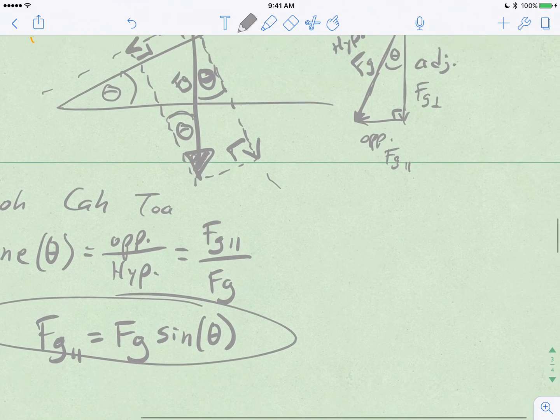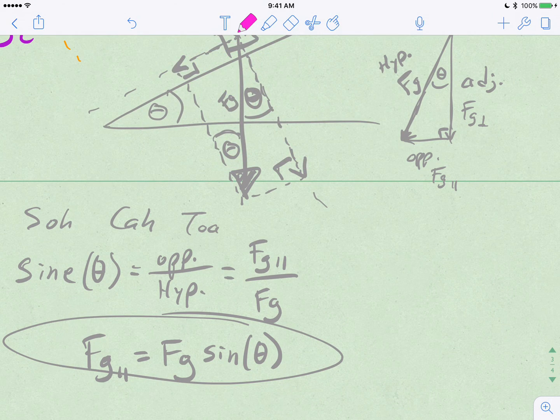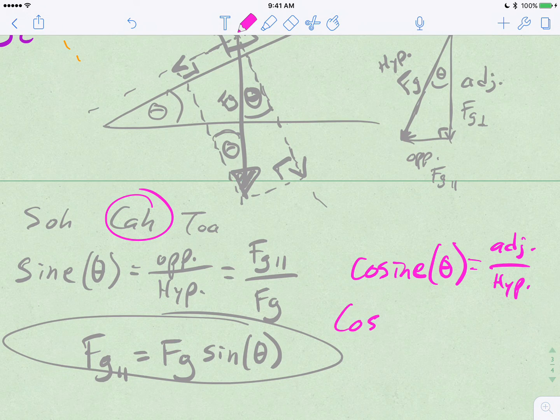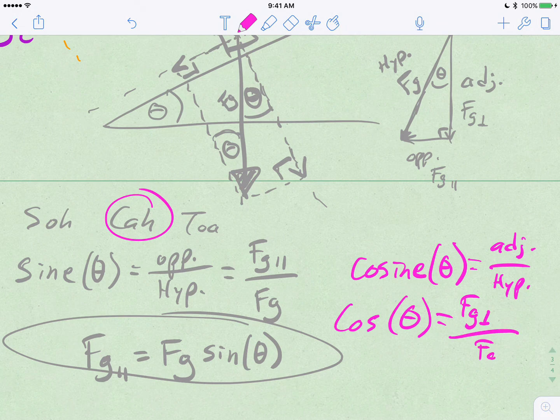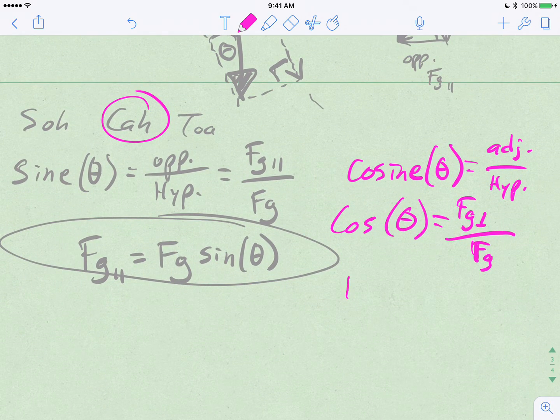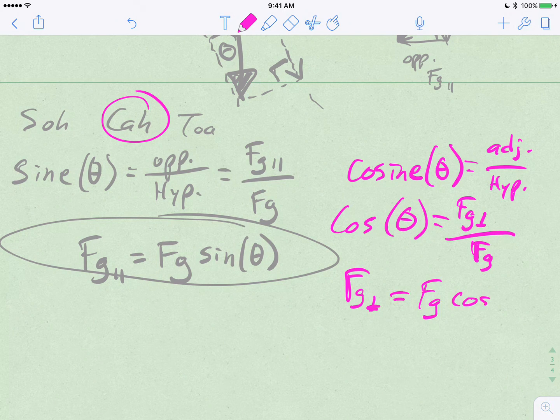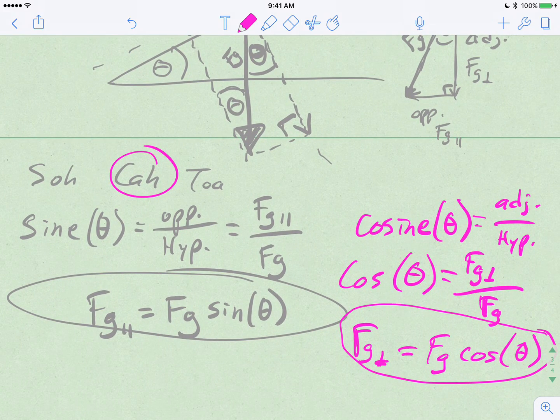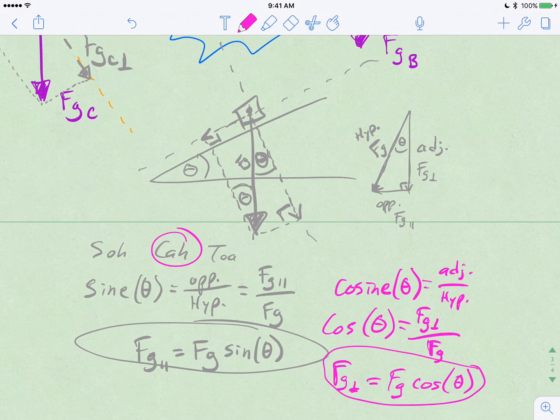Now, same thing happens if you play around with cosine. So if we play around with cosine, let's use a nice pink for this. Let's go colorful here. Cosine. So cosine of theta is equal to the adjacent side over the hypotenuse. And in this case, I'm going to abbreviate cosine now, just cos. That's equal to the perpendicular component divided by the whole weight. Rearrange that. Multiply both sides by the weight or just basically get FG perpendicular by itself there on the left. And we're going to see that you can multiply the weight by the cosine of theta. And you'll always be able to find the perpendicular component of the weight.